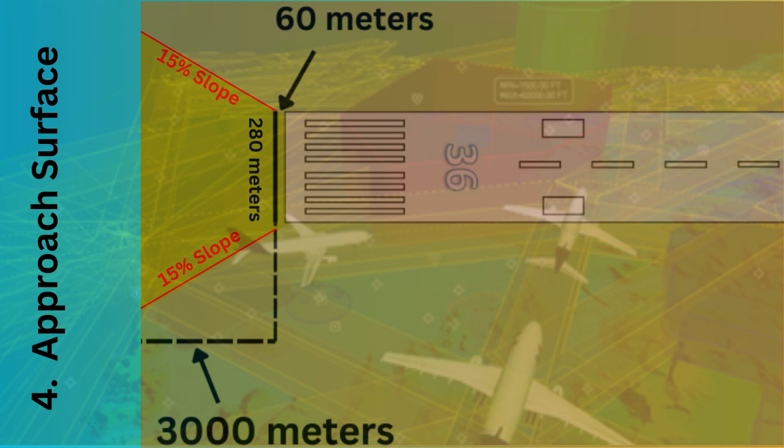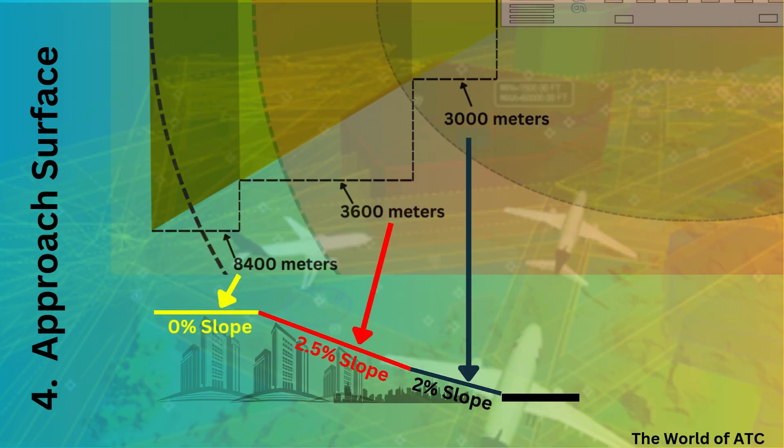Looking at the profile view of these surfaces, the innermost surface has a slope of 2% from the runway up to 3,000 meters. The second surface then has a slope of 2.5% for 3,600 meters, and the third surface has a slope of 0% — that is, no slope — until the end of the obstacle limitation surface.